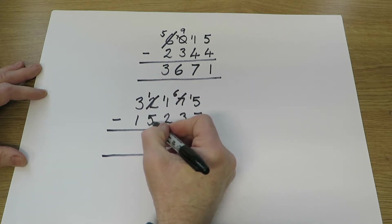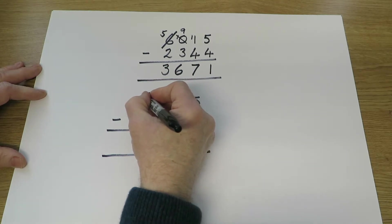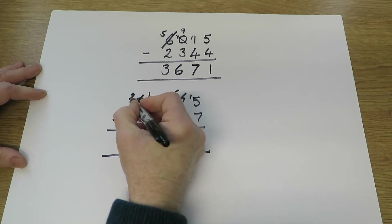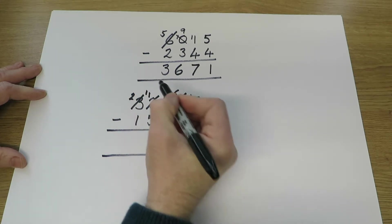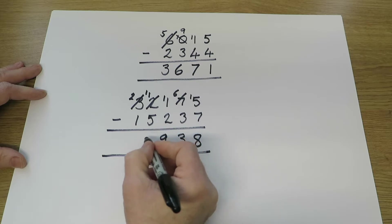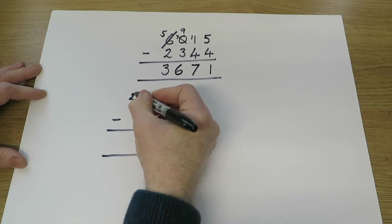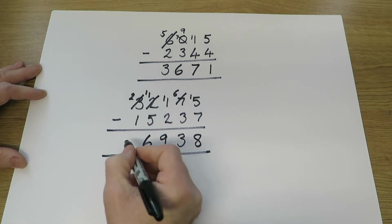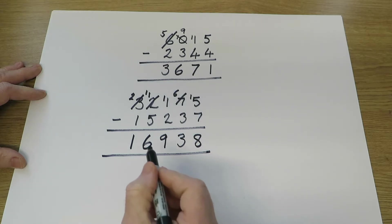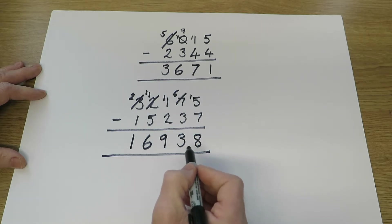1,000 subtract 5,000. Not enough thousands, so use one of the 10 thousands. So now we've got two lots of 10 thousands. 11 thousands. 11 take away 5 is 6,000. 2 ten-thousand take away 1 ten-thousand is 1 ten-thousand. So the final answer, 16,938.